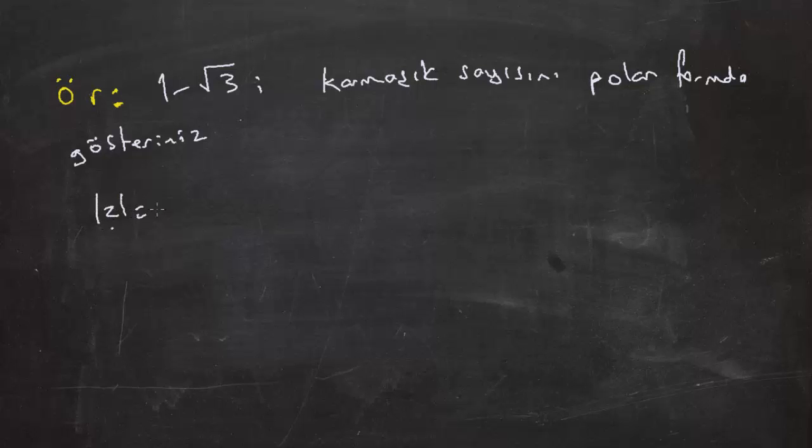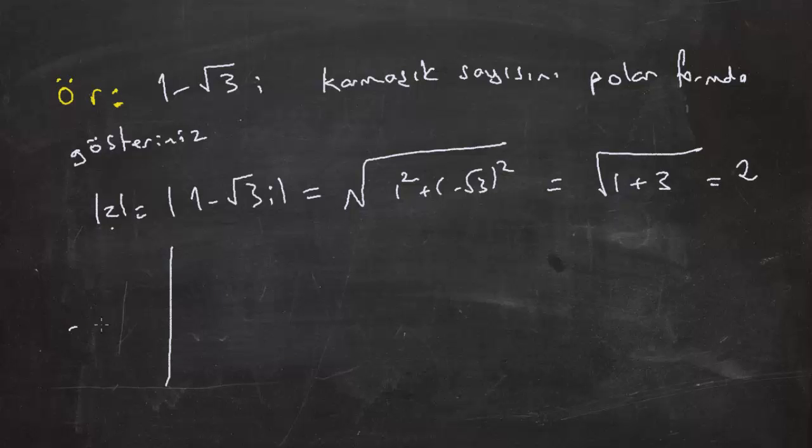Şimdi biraz daha zor bir örneğe bakalım. Mesela elimizde 1 - √3i olsun. Karmaşık sayısını polar formda gösteririz. Şimdi tabii ki boyu çok kolay bir şekilde bulabiliriz. Hemen bulalım. |z| yani |1 - √3i| eşittir kök içerisinde 1'in karesi artı (-√3)'ün karesi eşittir kök(1 + 3) eşittir 2. Bunu çok kolay bir şekilde bulabiliriz. Belki esas argümenti bulmak biraz daha zor.